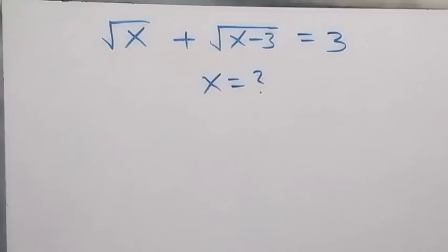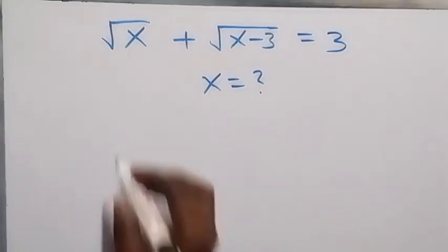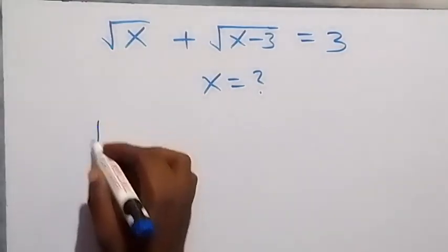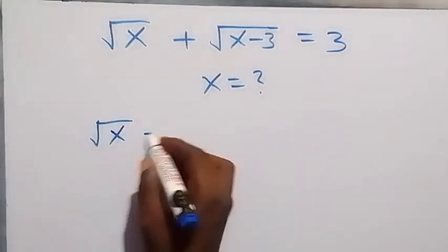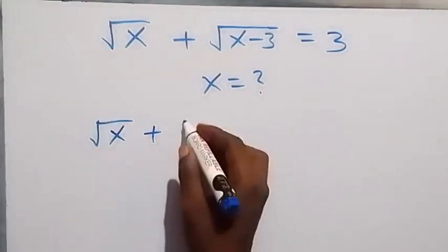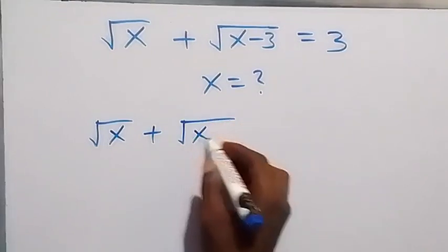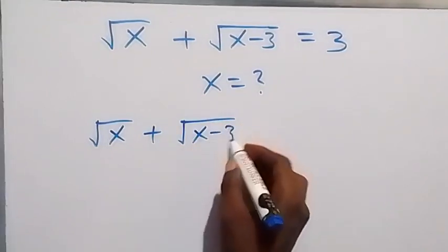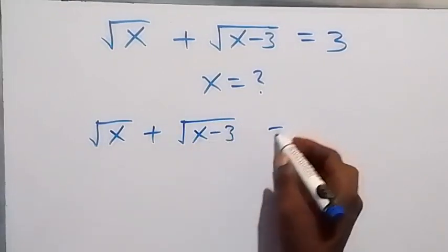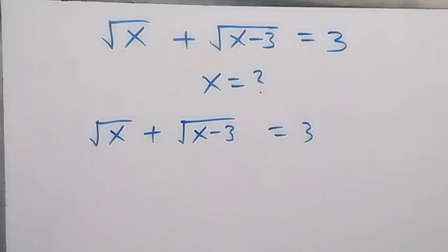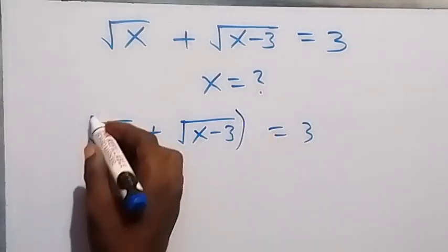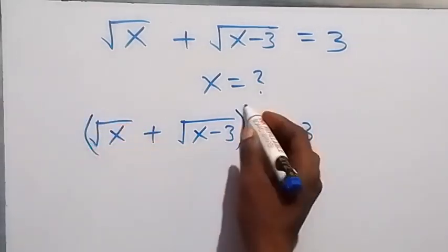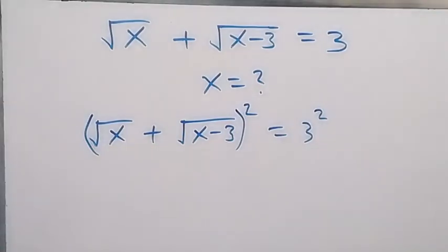Hello, you are welcome. How to solve this nice math problem involving roots. We have root x plus root x minus 3 equals to 3. From here, let's square both sides.